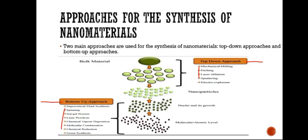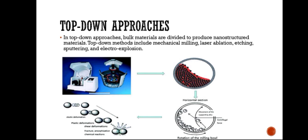There are basically two approaches to the synthesis of nanomaterials: the top-down approach and the bottom-up approach. The top-down approach contains mechanical milling, etching, laser ablation, sputtering, and electro-explosion. The bottom-up approach contains spinning, sol-gel process, laser pyrolysis, chemical vapor deposition, molecular condensation, chemical reduction, and green synthesis.